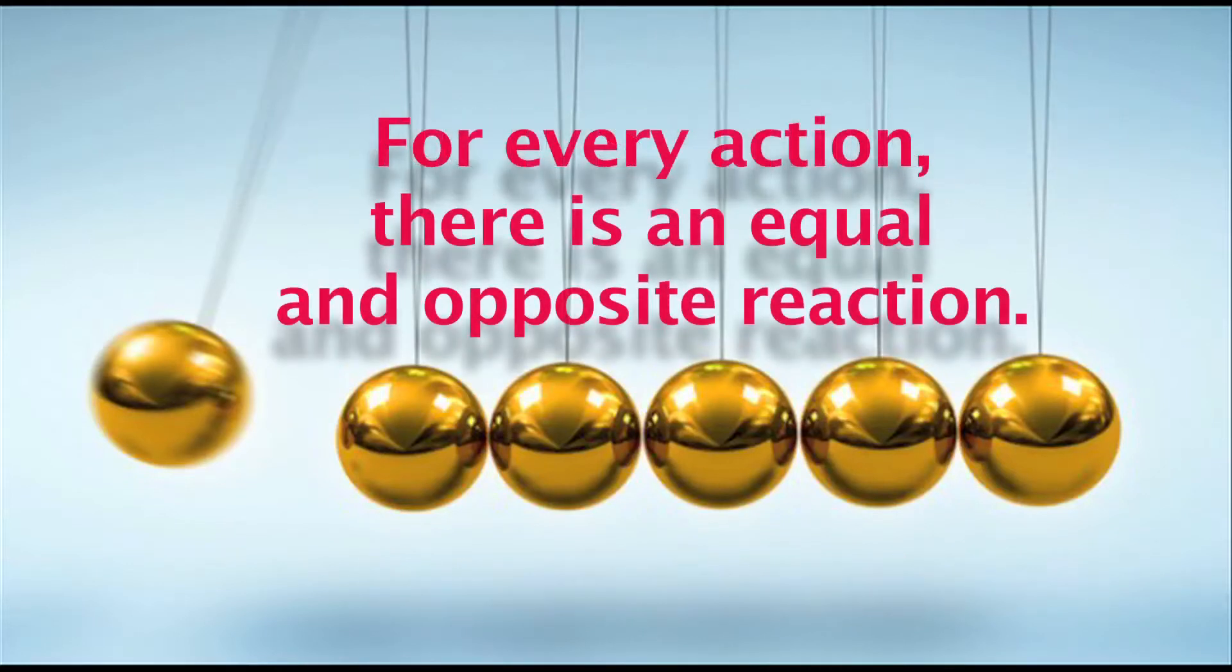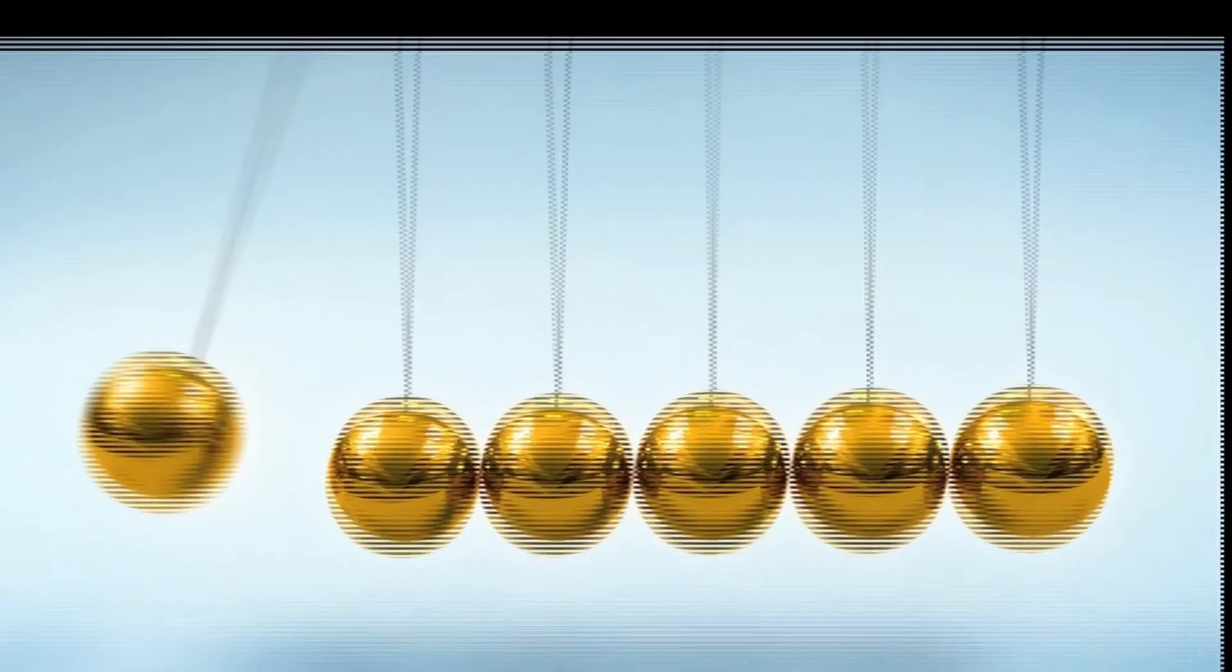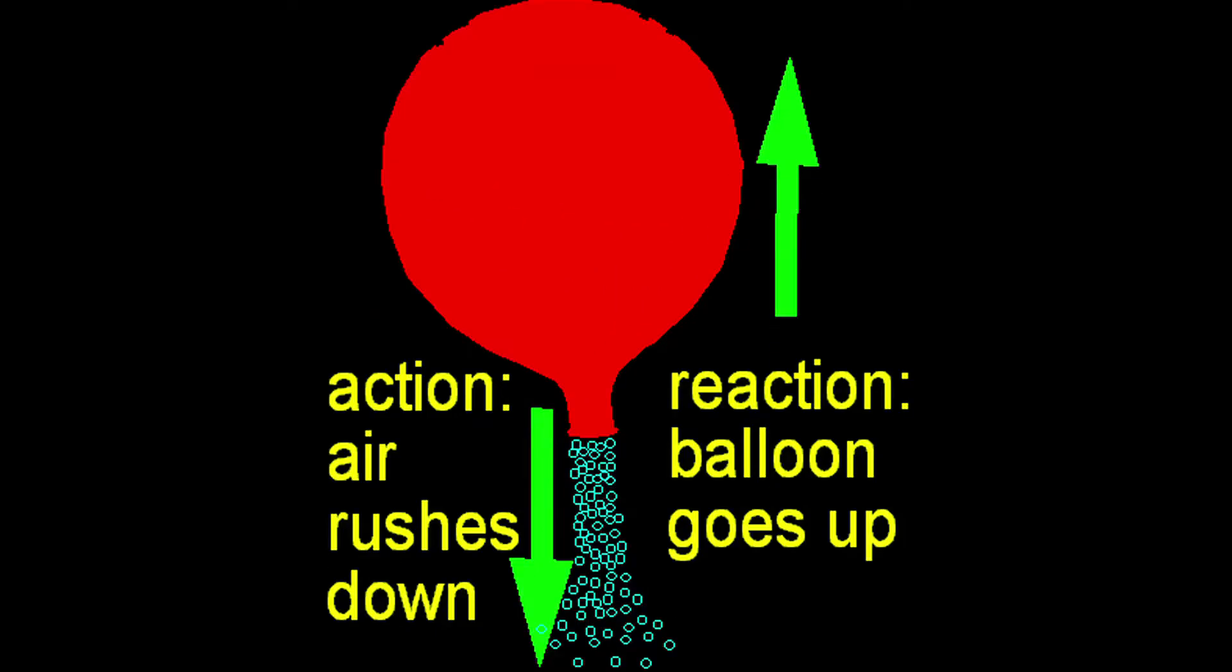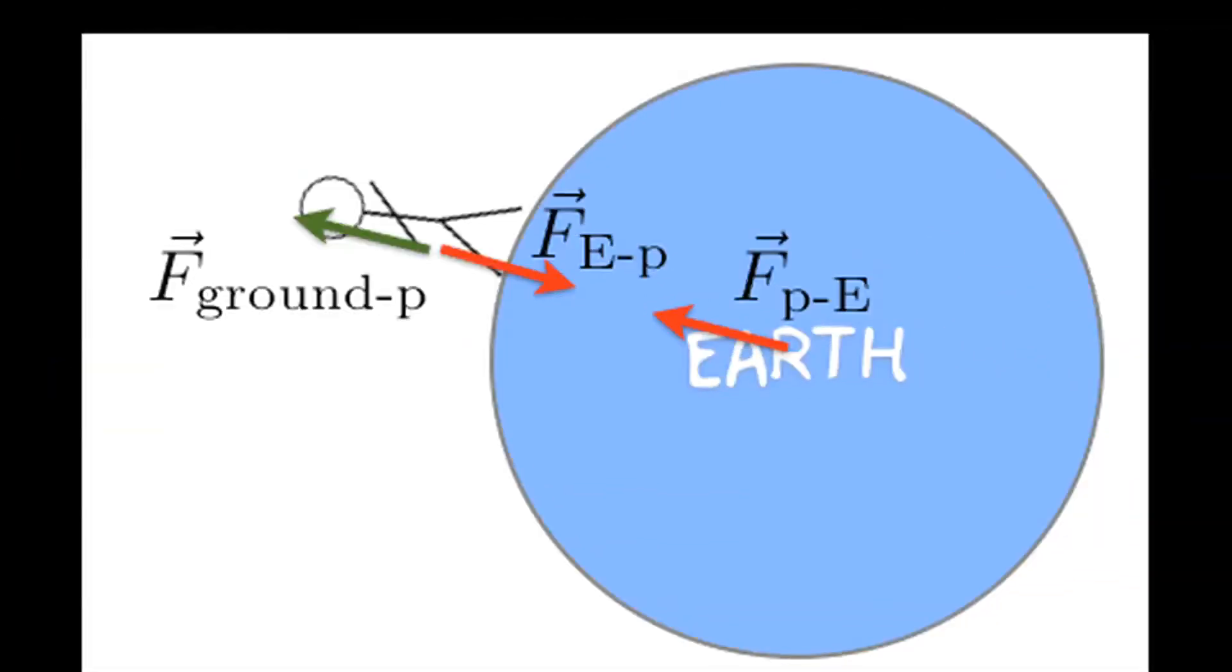Newton's third law: for every action there is an equal and opposite reaction. This statement means that in every interaction there is a pair of forces acting on the two interacting objects. The size of the force on the first object equals the size of the force on the second object. The direction of the force on the first object is opposite to the direction of the force on the second object.